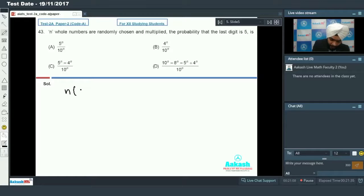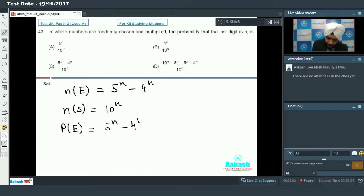If I choose only odd numbers, the last product can be 5. Number of favorable cases will be 5 raised to power n, minus the cases where 5 doesn't appear. If I choose only 1, 3, 7, and 9, I won't get 5 at the end. So 4 power n cases to subtract. Total cases: each number can be chosen in 10 ways, so 10 raise to power n. Probability is 5 raise to power n minus 4 raise to power n divided by 10 raise to power n. Obviously option number C matches.